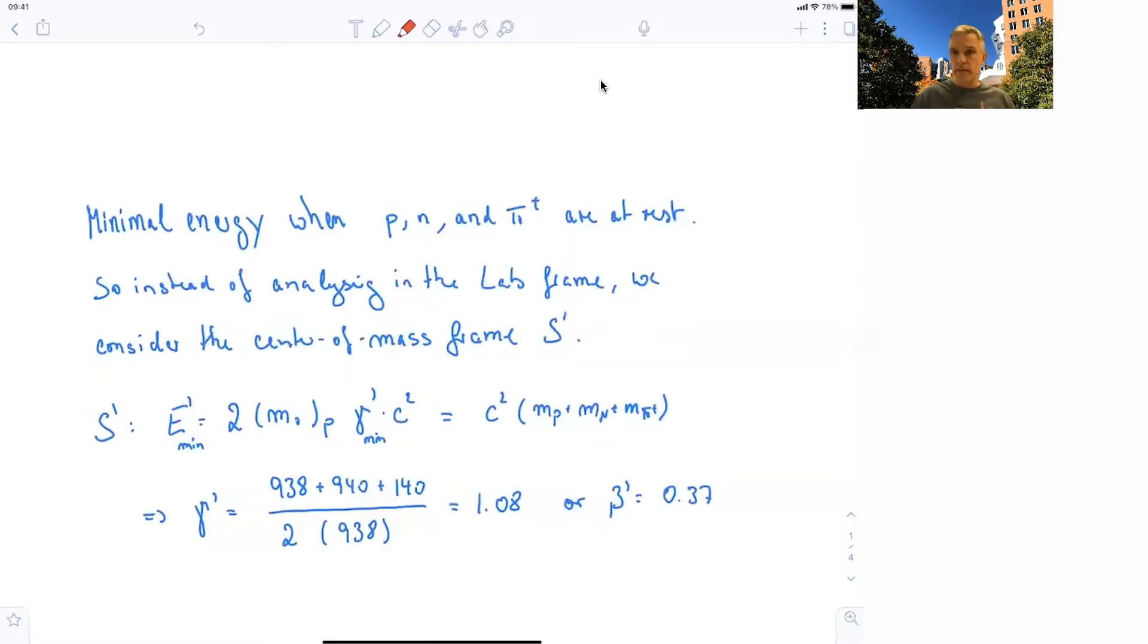That is when the process requires minimal energy. So instead of analyzing this in the laboratory frame, we want to analyze this in the center of mass frame. The momentum has to be conserved in this discussion. But in the center of mass frame, that's not required. So in that frame, the momentum of all outgoing particles can be zero. And that's how we start the discussion.